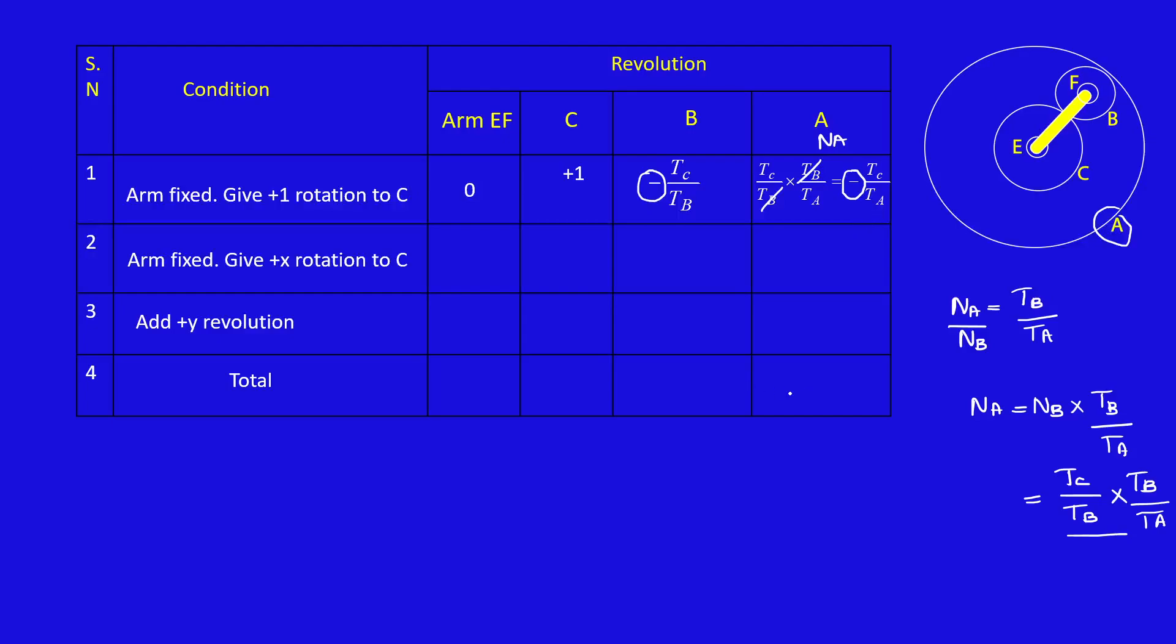Internally means whatever the direction we have on B can be kept on A. So this is minus TC by TA. You have to be very careful on choosing the direction. If both gears contact externally then plus means minus, minus means plus. If both gears have internal contact, minus minus or plus plus. That's why here B and A has internal contact, so minus minus.